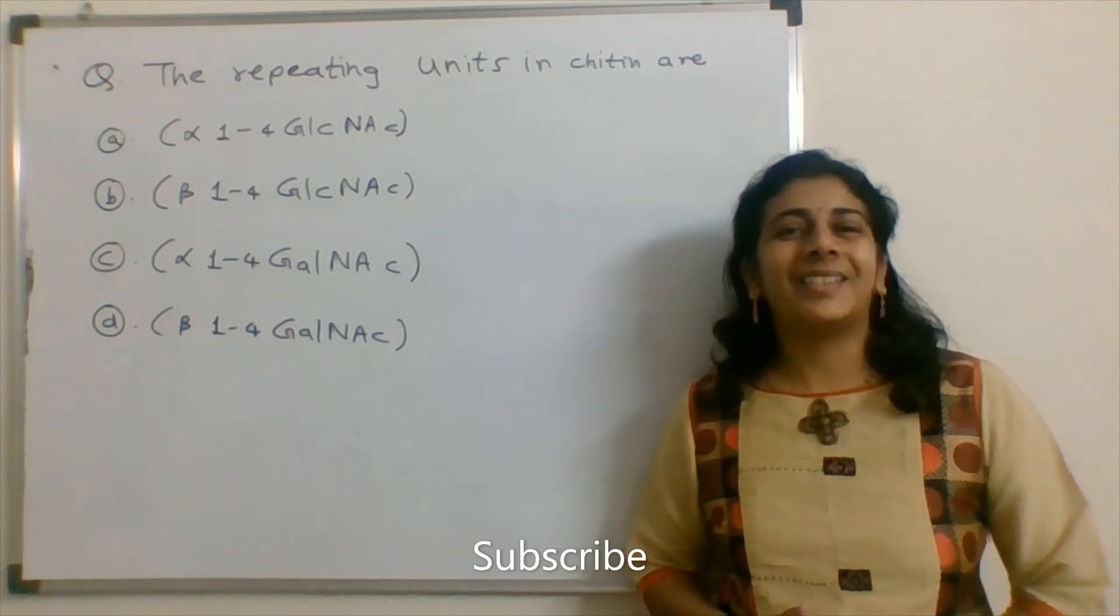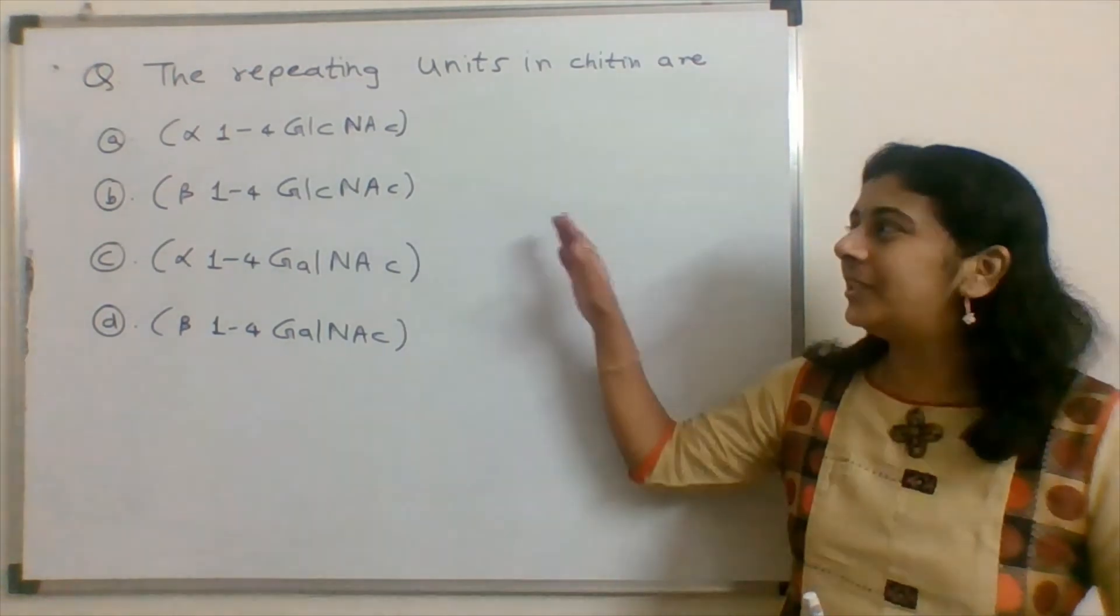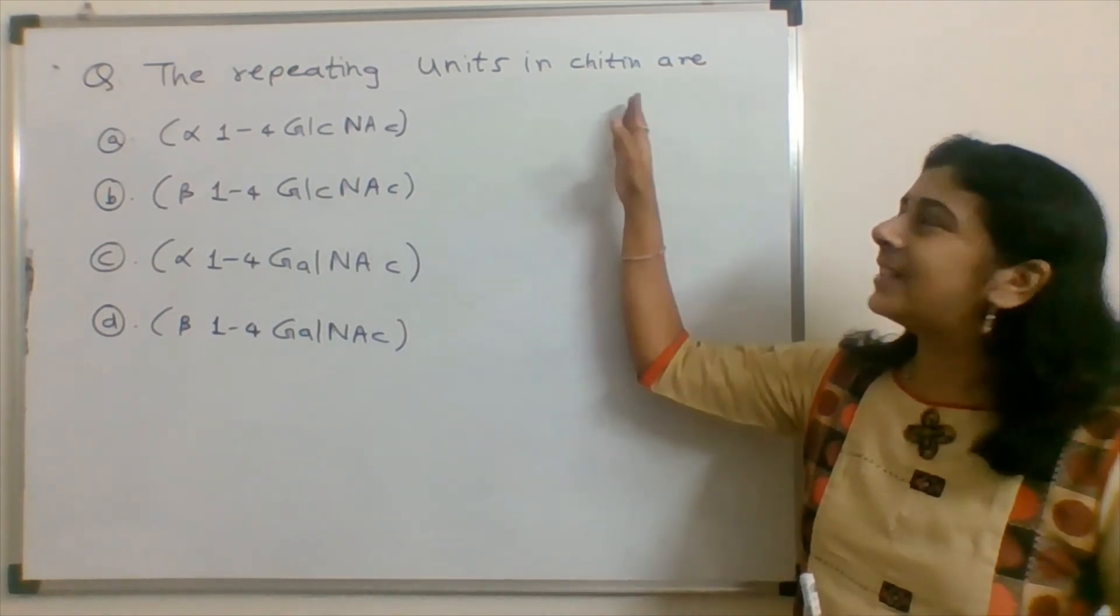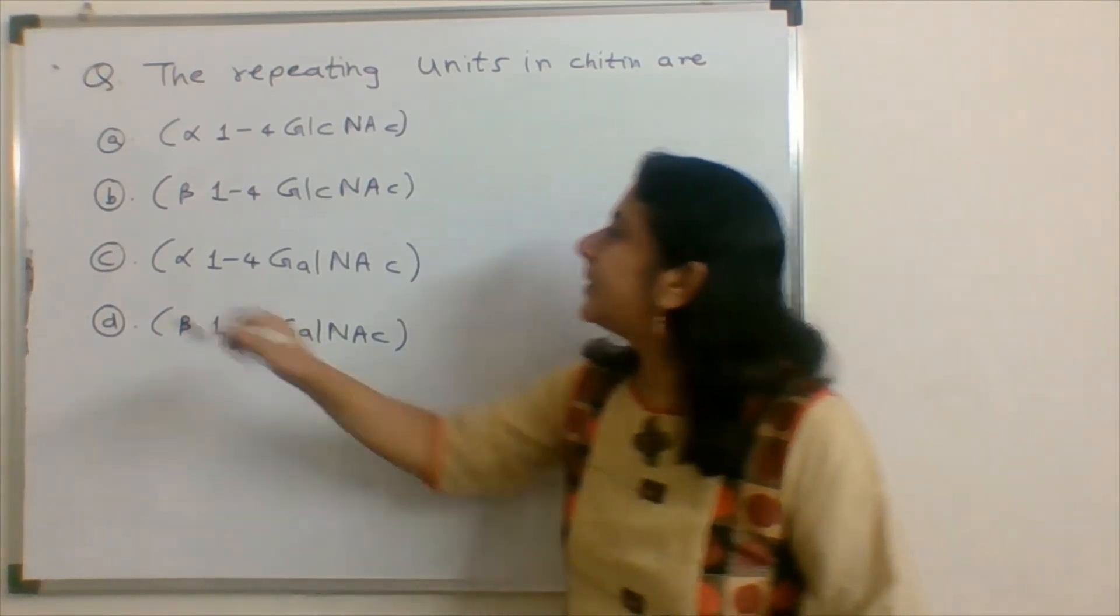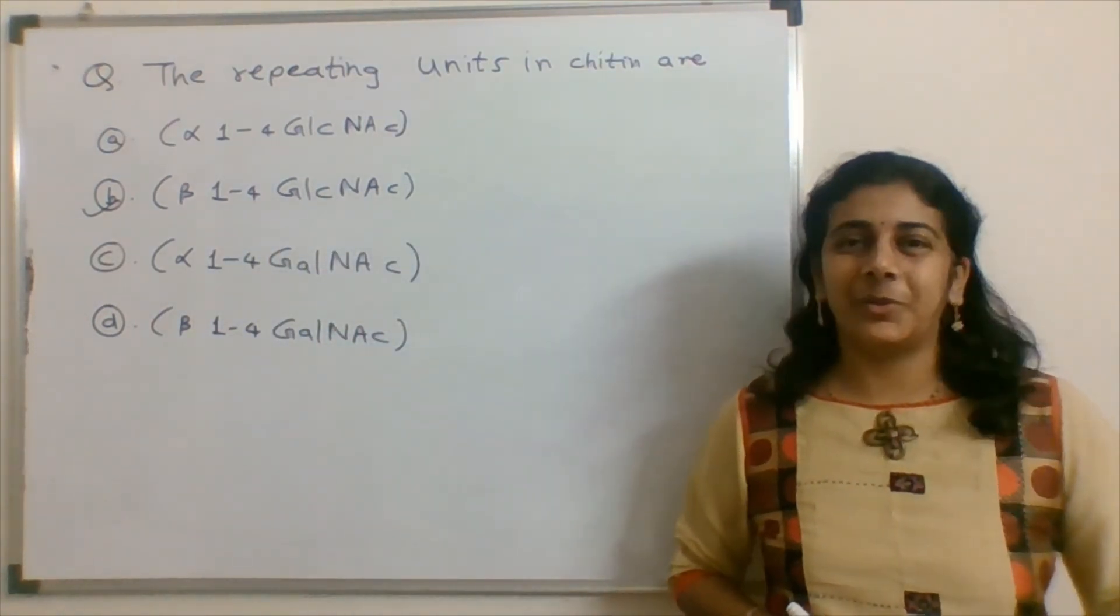So with this discussion, we find the answer for the question as option B. The repeating units in chitin are beta-1,4 N-acetylglucosamine.